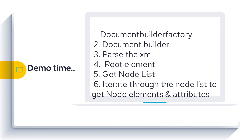Alright, time for a demo. I just want to explain the steps we are going to take to write the code. First, we have to create an instance of DocumentBuilderFactory. Once we have that object, we'll use it to create an instance of DocumentBuilder. The DocumentBuilder object will be used to parse the XML file. Then we'll write code to read the root element, fetch the node list, and iterate through each node to get node elements and attributes.